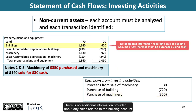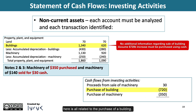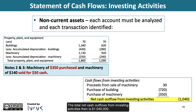There is no additional information about any sales related to the building account, so we can safely assume that the difference of $720,000 is all related to the purchase of a building. The total net cash outflows from investing activities is $1,040,000.